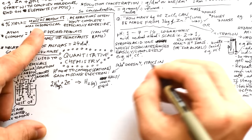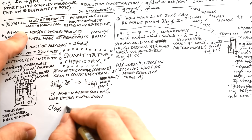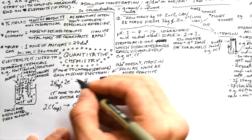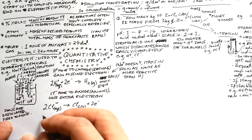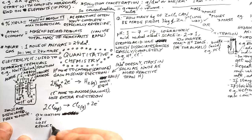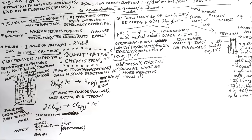We can write ionic half-equations for each electrode. At the cathode: 2H⁺(aq) + 2e⁻ → H₂(g). At the anode: 2Cl⁻(aq) → Cl₂(g) + 2e⁻. Positive ions in solution are called cations (they move to the cathode); negative ions are called anions (they move to the anode). The mnemonic to remember is OIL RIG — Oxidation Is Loss, Reduction Is Gain of electrons. Reduction happens at the cathode; oxidation happens at the anode.